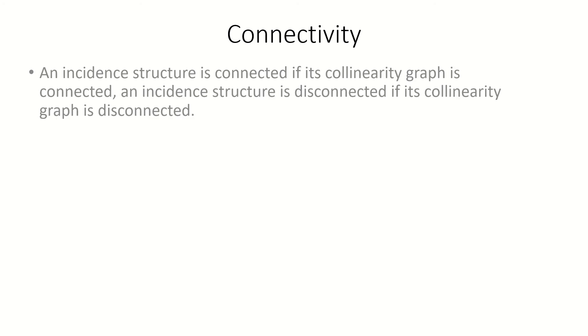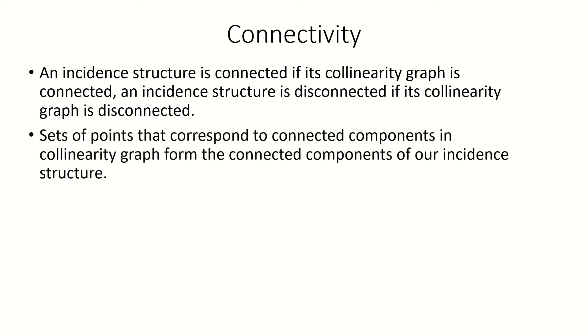Moving on, the collinearity graph lets us define connectivity for an incident structure. We say an incident structure is connected if its collinearity graph is connected. The sets of points that correspond to connected components in our collinearity graph form the connected components of our incident structure.